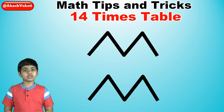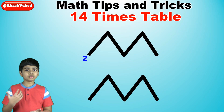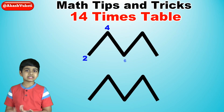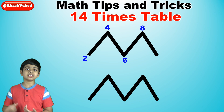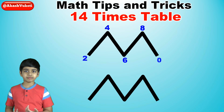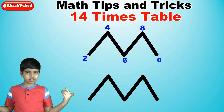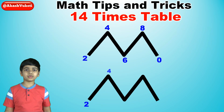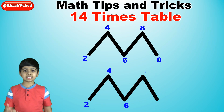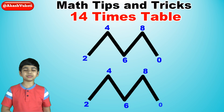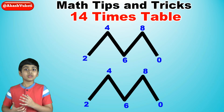So: 2, 4, 6, 8, 0. And the same for the other M: 2, 4, 6, 8, 0.